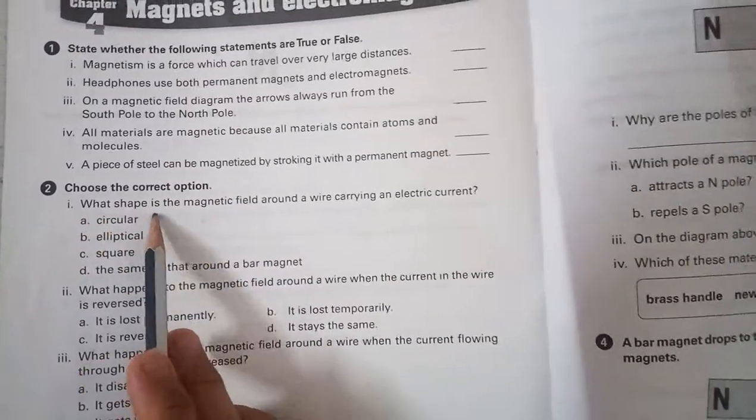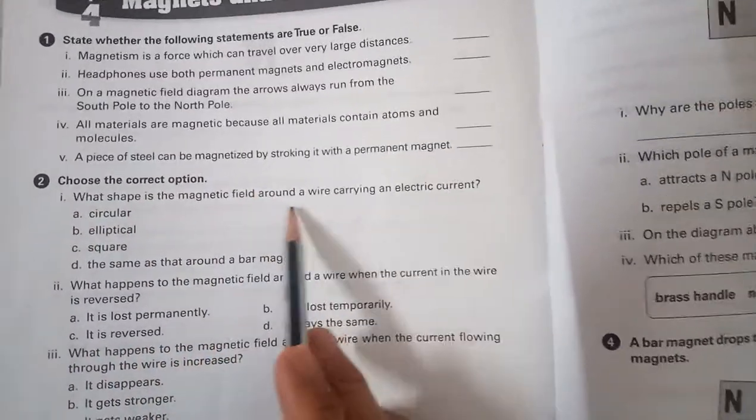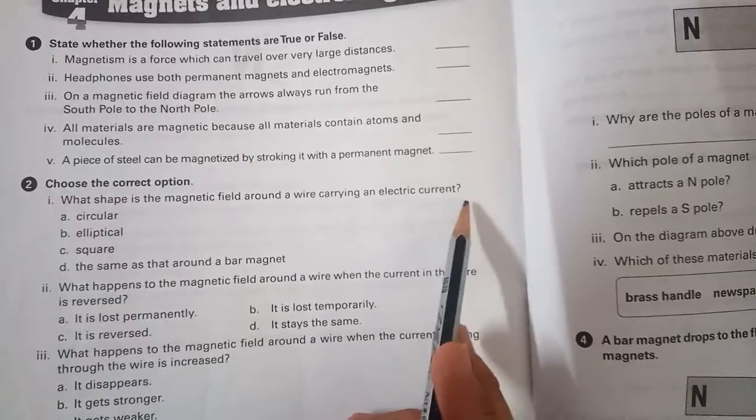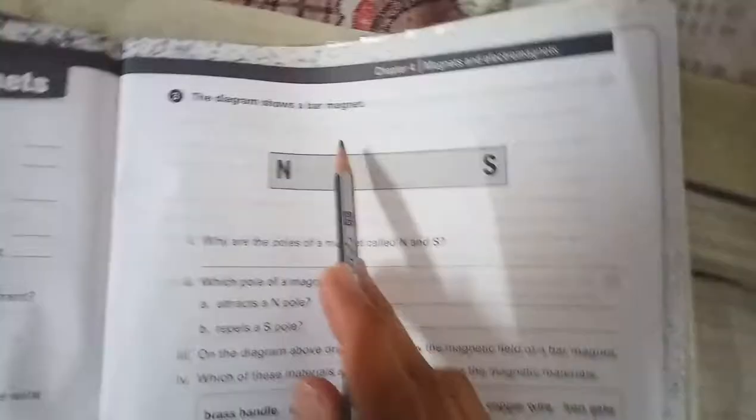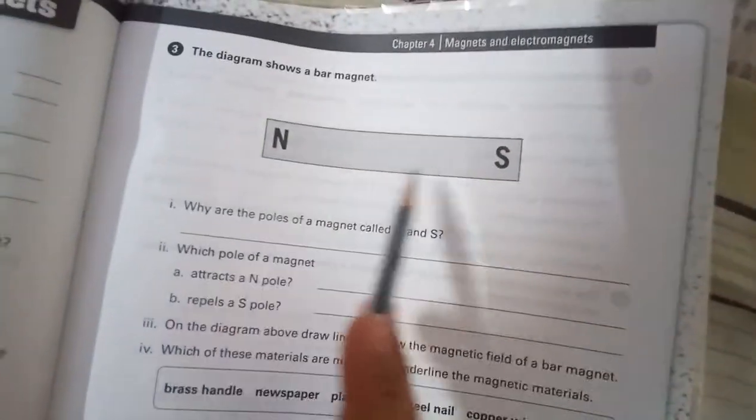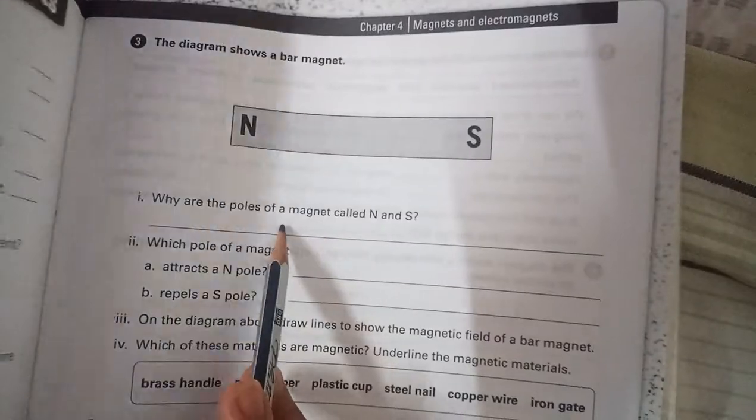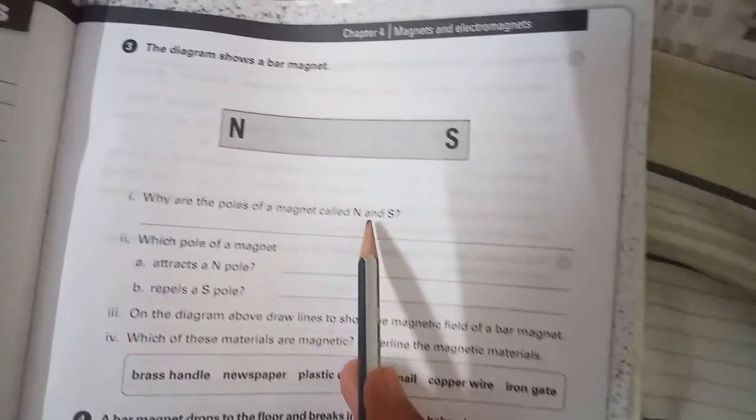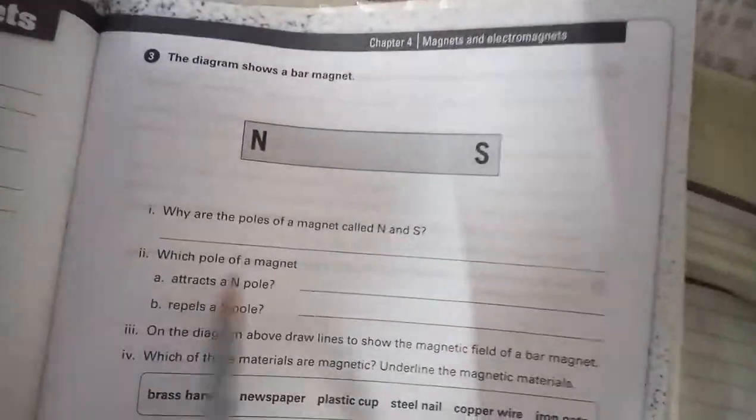Which shape is the magnetic field around the wire carrying an electric current? Which shape? There here a diagram is. Which shape showing a bar magnet? Where are the poles of a magnet called N and S?